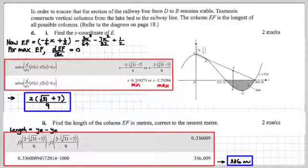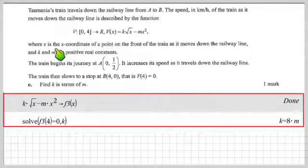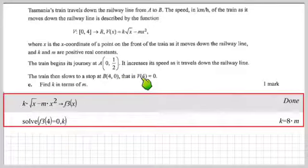And all the poor travellers. All right, come on, we better keep going. I fear there's something else happening here. Tasmania's train travels down the railway line from A to B. Well, we figured that. The speed in kilometres per hour of the train as it moves down the railway line is described by the function, goes from 0 to 4, where it's this thing. k root x minus mx squared. Well, who knows what that looks like? We probably don't need to know. Let's keep going. Where x is the coordinate of a point on the front of the train as it moves down the railway line. And k and m are positive real constants. All right. Good, I think I've got all that. The train journey begins at the top of the mountain. We know that, or we assume that. It increases its speed as it travels down the railway line. Thrills and spills. The train then slows to a stop at B, 4, 0. That is the velocity at x is 4 equals 0. Well, I think I've got all that, don't you?